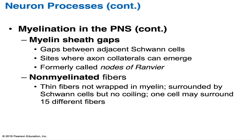In non-myelinated peripheral fibers, Schwann cells surround the fibers but the coiling process doesn't occur. A single Schwann cell can enclose up to 15 or more axons, each occupying a separate recess in the Schwann cell surface.